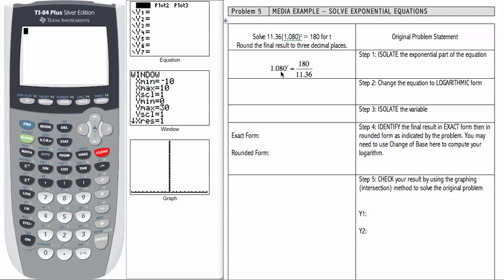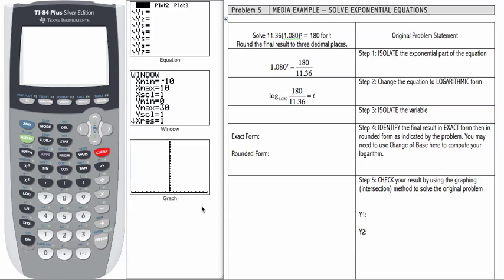Now that our exponential part is isolated, we can use our transformation formula to change the form from exponential form to logarithmic form. If we do that, we get log base 1.080 of 180 over 11.36 equals t.